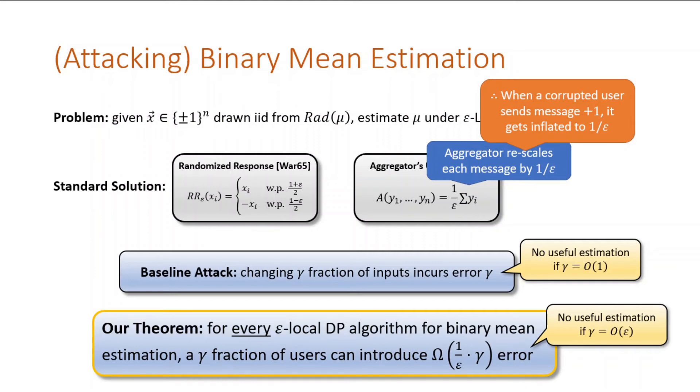Our work shows that every locally private solution for this problem, not just randomized response and not just this aggregator, has this level of vulnerability. To prove this theorem, we will focus first on randomized response, but with an arbitrary aggregator. We will generalize to other randomizers later on.